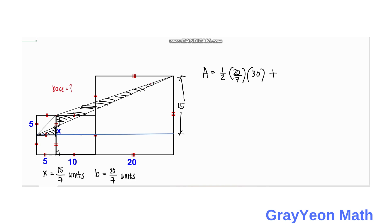Next is we add this smaller triangle. It has a base of the same, that is 20 over 7, so one-half times 20 over 7 times the height which is 5.